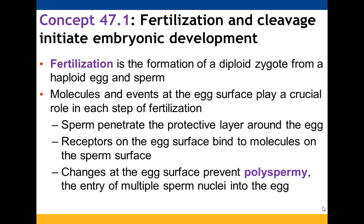Fertilization is when you form a diploid zygote from a haploid egg and sperm. There are specific events that have to take place and certain molecules that must be present at the egg surface to enable fertilization to occur successfully. Generally speaking, sperm penetrate the protective layer around the egg, egg surface receptors bind to molecules present on the sperm surface, and then the egg surface undergoes changes to prevent polyspermy — multiple sperm nuclei entering the egg.